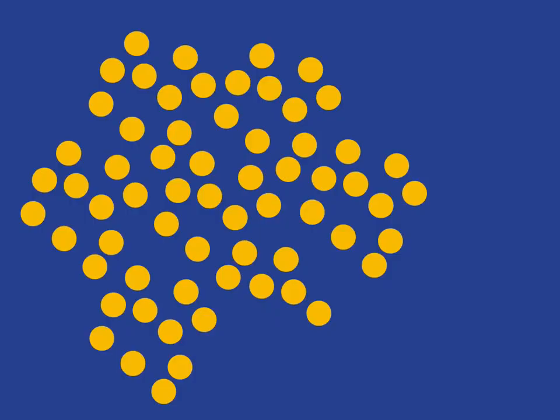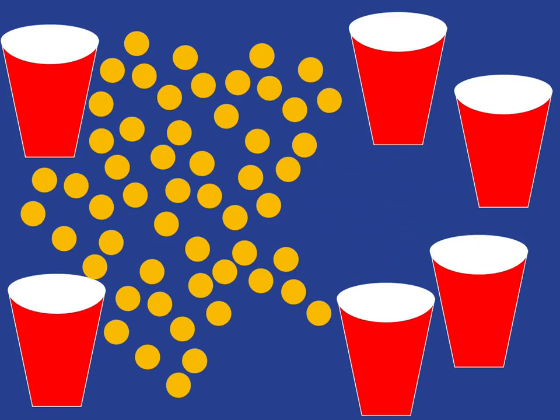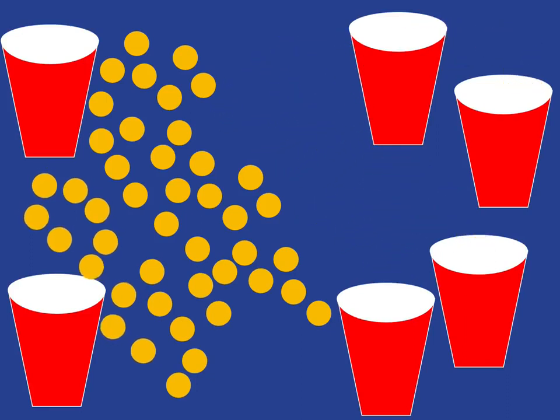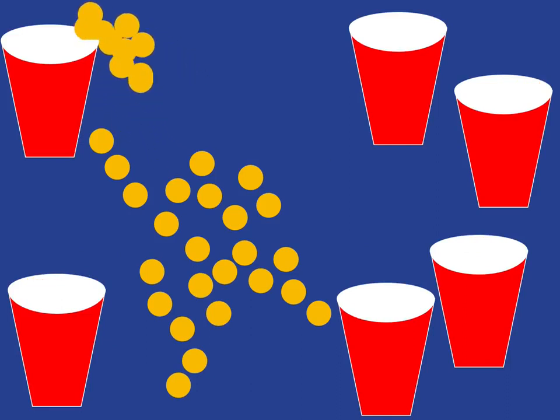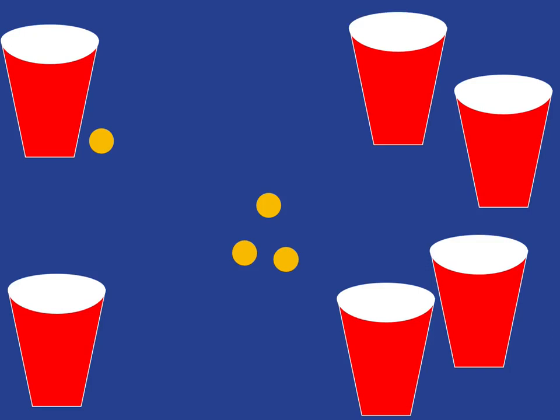If I were to ask you how many counters you can see here, it will probably take you quite a bit of time to work it out. However, if I start grouping those counters into groups of 10 and popping each of the groups of 10 into a container, it will be easy for you to see that there are 10, 20, 30, 40, 50, 60, 4 counters.